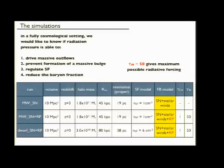As those run by Phil Hopkins and others, we adopt the value of this optical depth, which is about between 10 and 50. So in order to understand the effect that radiation pressure has in driving outflows and preventing star formation, regulating star formation, preventing the formation of a massive stellar bulge and reducing the baryon fraction, we run three initial models.